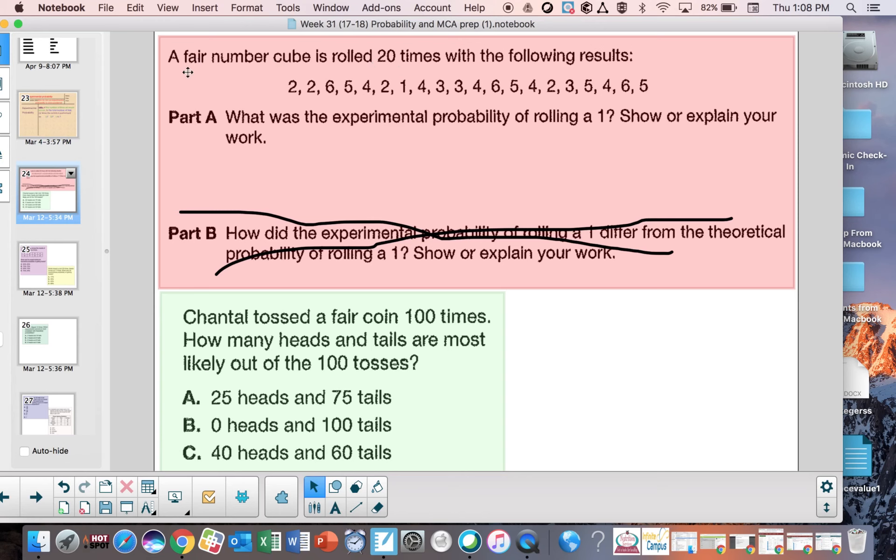Here, you see an experiment happened. A number cube is rolled 20 times and the results are here. When it says, what is the experimental probability of getting a 1 or rolling a 1, we look at what the results were, and this is what we base our answer off of. It's based off of what happened. We want to go through carefully and see how many times we get a 1. I see 1 and that's it. I'll go through again because I want to be careful. So I got a 1 one time, and that would be out of my bottom number, the total number of trials, and that was 20.